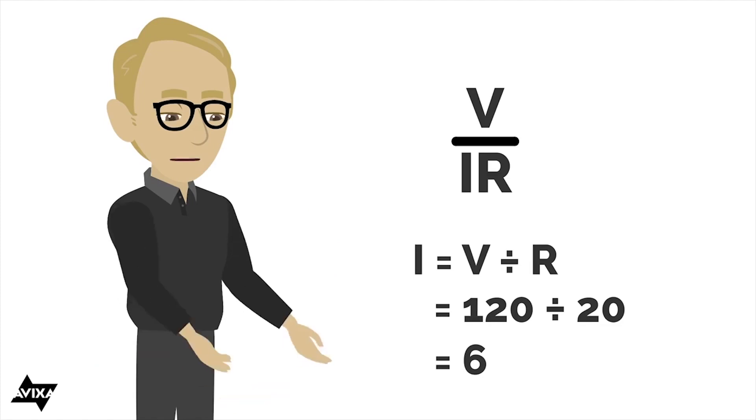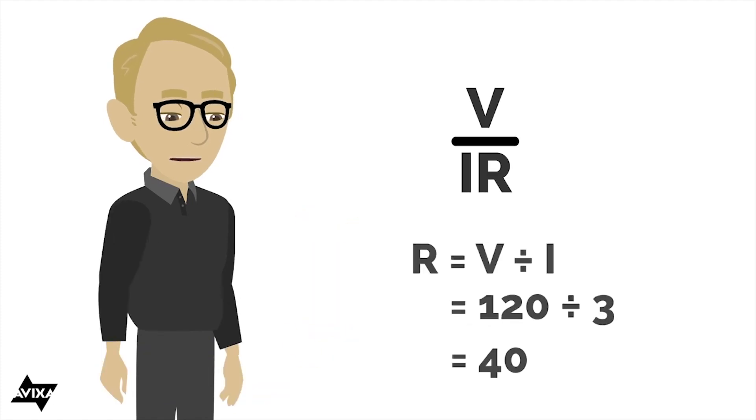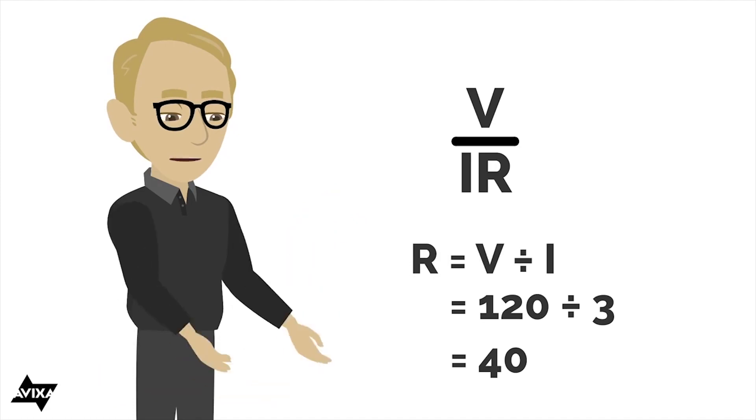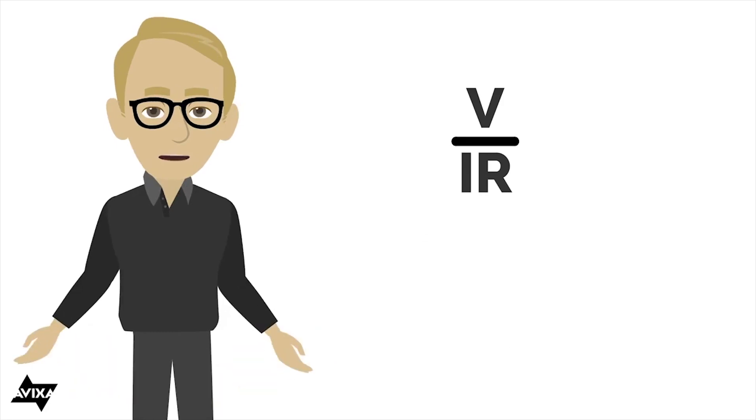Let's do one more. Let's say I want to solve for resistance. That's going to be voltage divided by current. Let's go with 120 volts again. And this time the current is going to be 3 amperes worth of current. So 120 divided by 3, that is going to be 40 ohms worth of resistance in the circuit. So VIR, put your finger over the value, and you can solve for the rest of Ohm's Law.